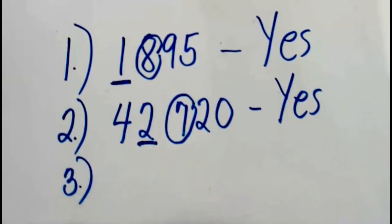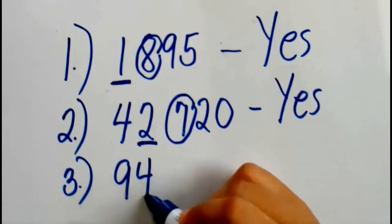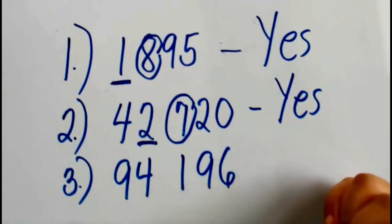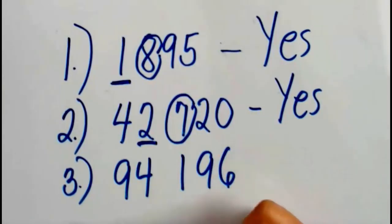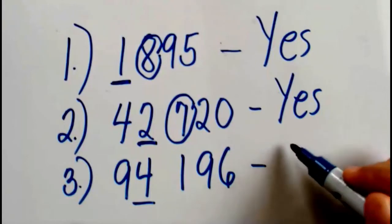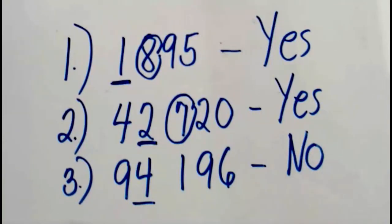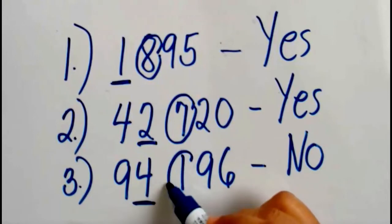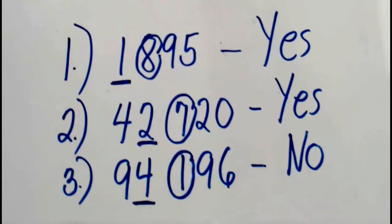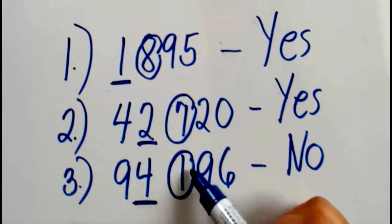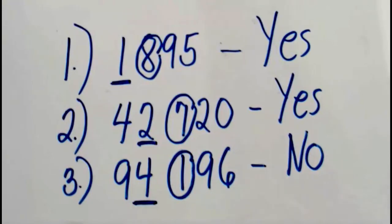Number 3, and this is our last number. The number is 94,196, and the digit that we're going to round off here is 4. Are we going to round this number up or no? No. At the right side of 4 is 1, so we are not going to round this number up. The answer is no.